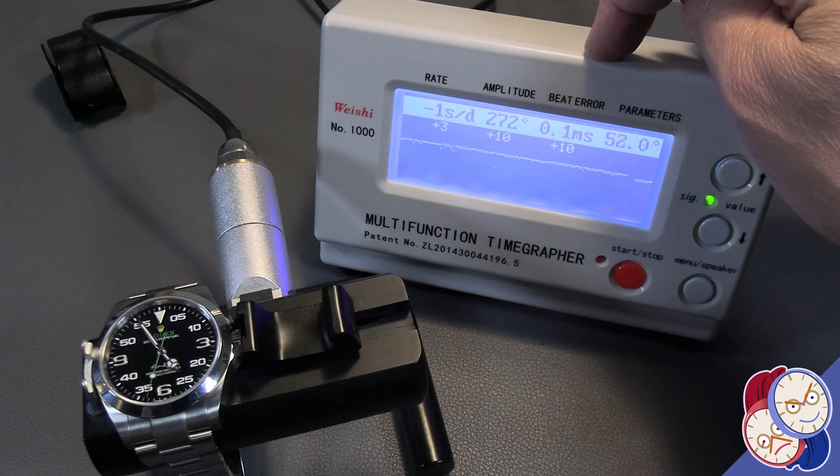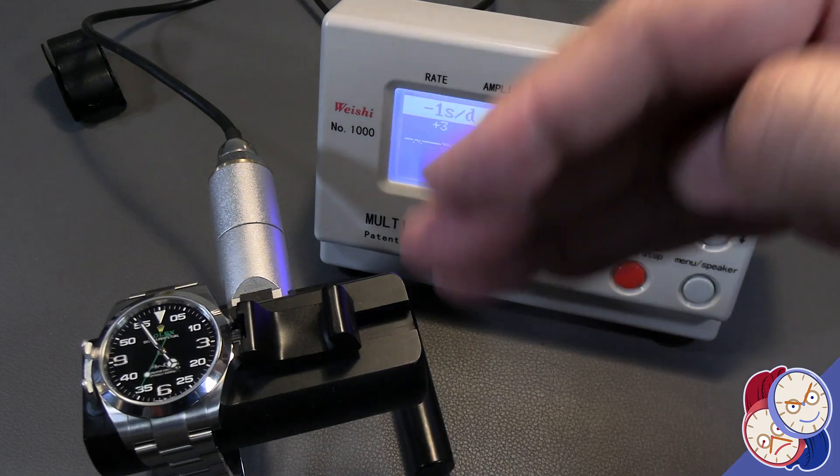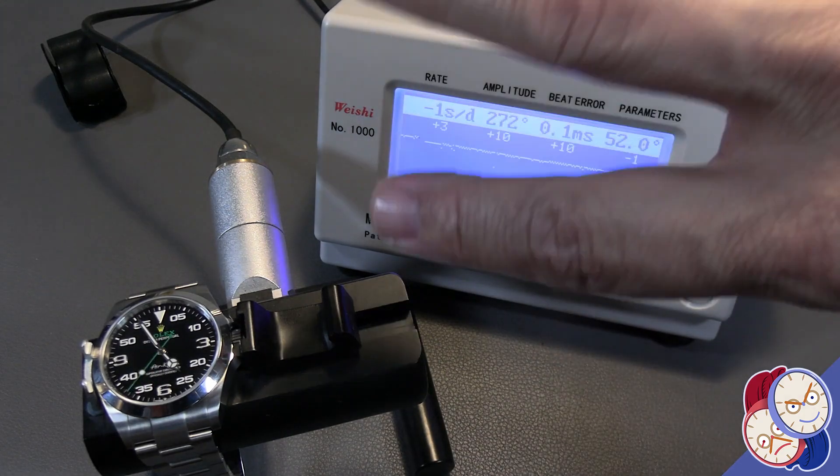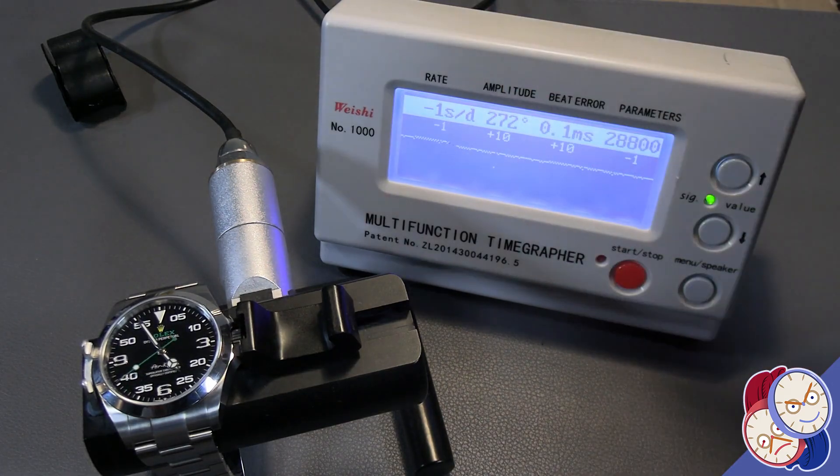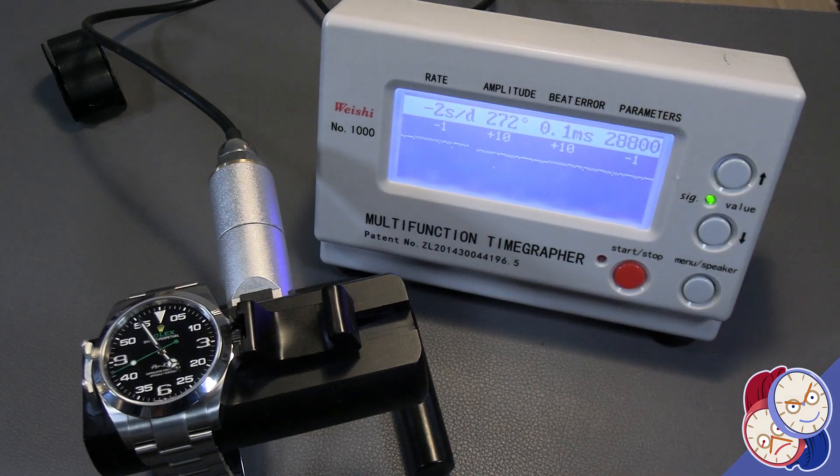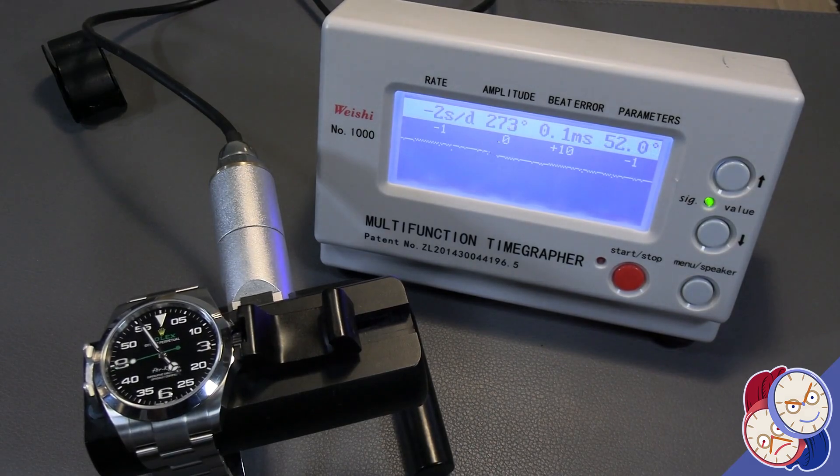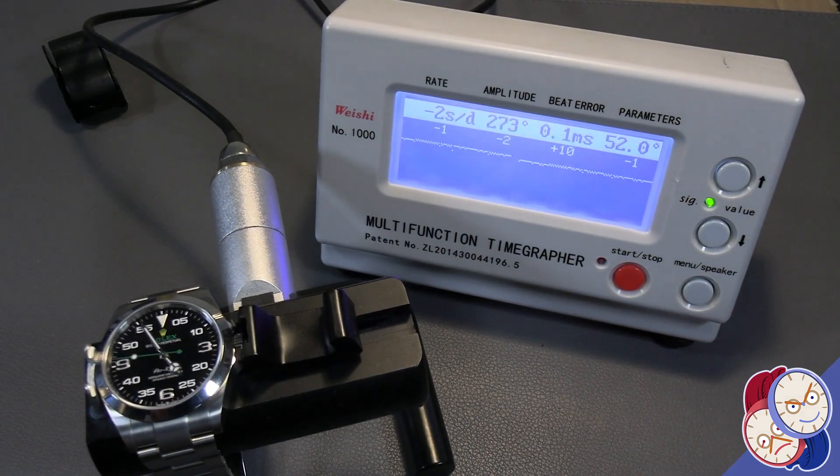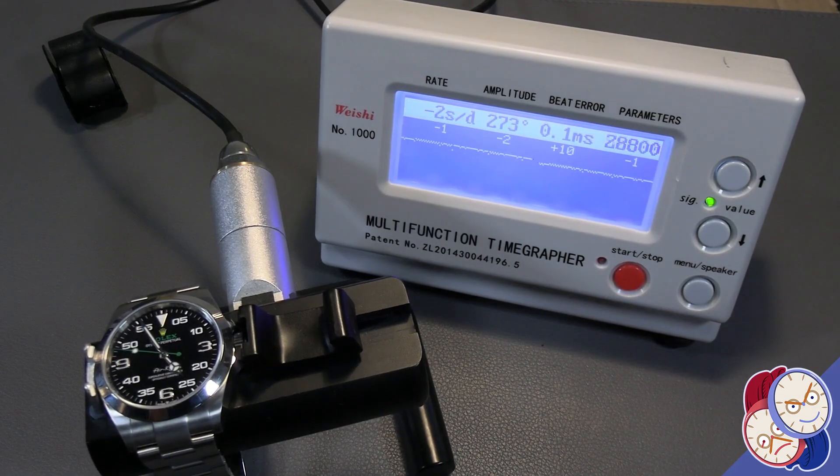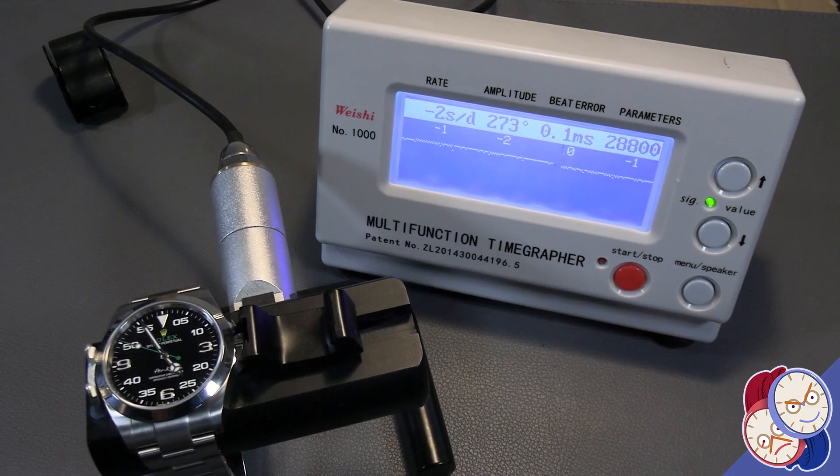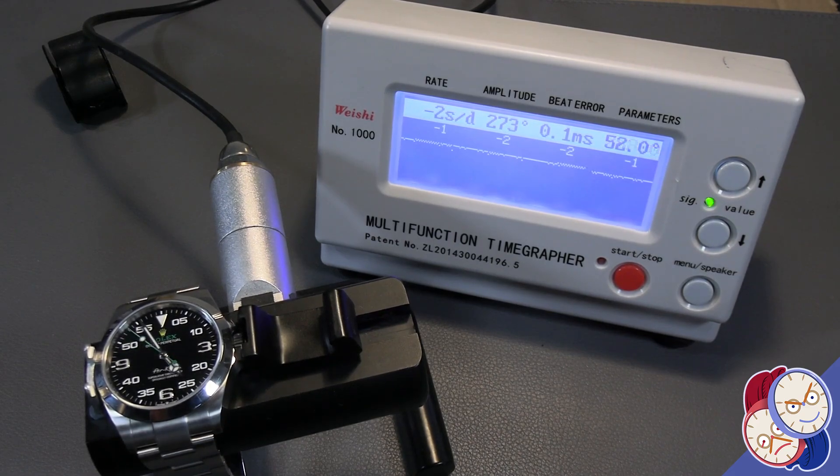The beat error is how much off the tick is back and forth. So it rotates in one direction, rotates in the other direction, and the difference is the beat error. And you want to be 0.1 milliseconds or better. You can go as high as 0.2 or 0.3 milliseconds, but a good watchmaker can regulate almost any decently made watch to 0.1 easily.